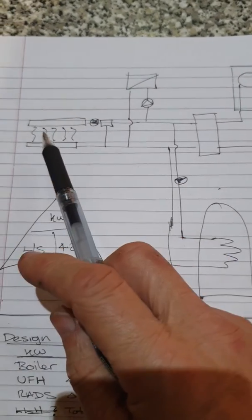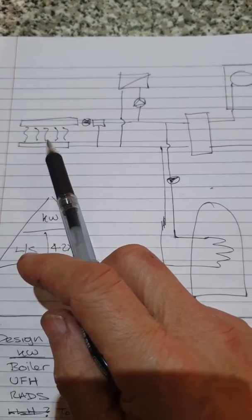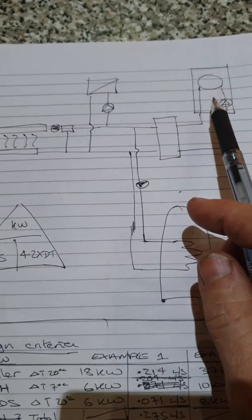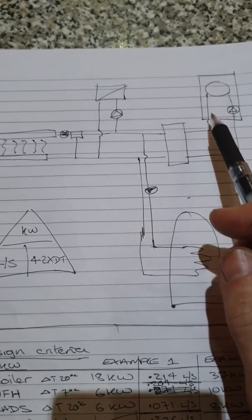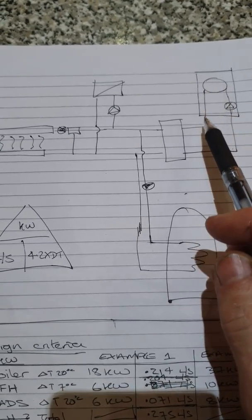The flow rate of the underfloor heating is usually very close to the maximum flow rate of the boiler. So for example, if I've got 20 liters a minute coming out of my boiler, the underfloor wants 20 liters a minute.